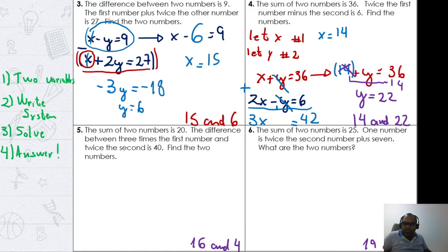The sum of two numbers is 20. The difference between three times the first number and twice the second is 40. Find the two numbers. We read the first time, let's read again and get the most important information. Let's define our variables.